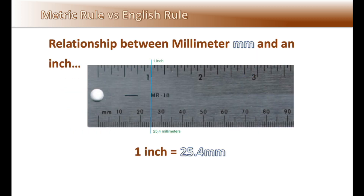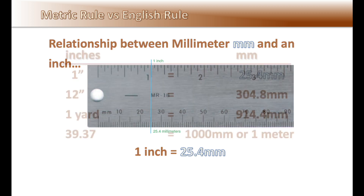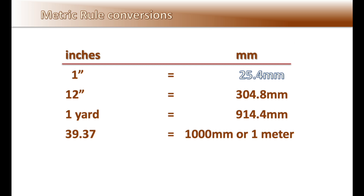What is important to know is how to convert between the metric system and the English system, or vice versa. The magic number is 25.4 millimeters to every inch. If you can remember this number, you can convert any metric linear measurement back and forth. For general information, the book lists some other conversions that are useful to know.